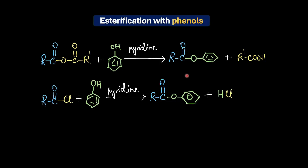To reiterate: simple Fischer esterification with phenol is highly inefficient because of the decreased nucleophilicity of phenols. But that's not a big problem because synthetic chemists have powerful tools — the use of activated acylating agents like acid chlorides and acid anhydrides. Their ability to selectively esterify phenol is incredibly important in organic synthesis and in various industries.